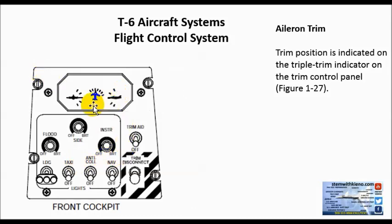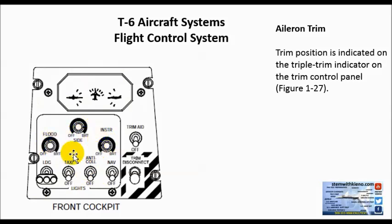The aileron trim position is indicated on the triple trim indicator on the trim control panel. It's on the left side, above your landing lights, taxi lights, anti-collision lights, and navigation lights. You also have your instrument lights, and your trim aid and trim disconnect. This is located in figure 1-27 in your manual. All participants in the API prep course get a manual with the course.